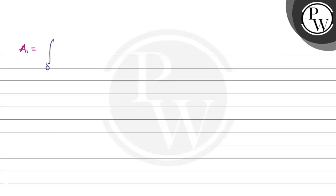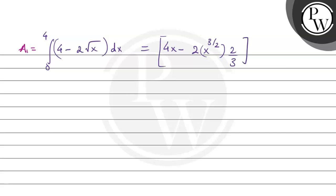So A1 will be equal to the integral from 0 to 4 of (4 minus 2 times square root x) dx. Integrating, we get 4x minus 2 times x to the power 3/2 times 2/3, with limits 0 to 4. Applying the upper limit: 16 minus 4/3 times 8, so the overall value for A1 is 16 minus 32/3, which gives us 16/3.